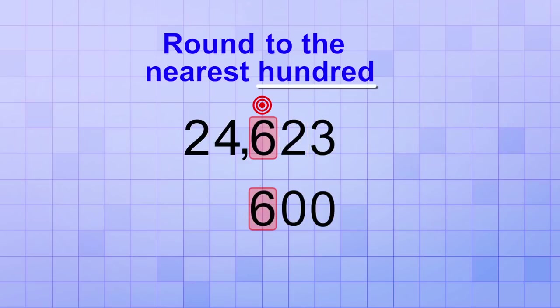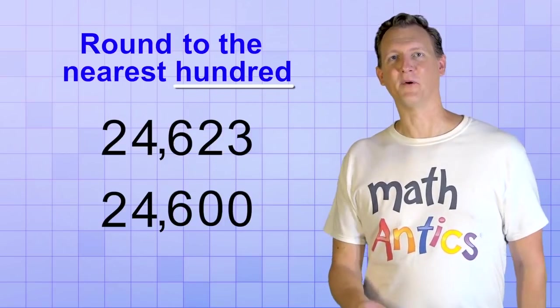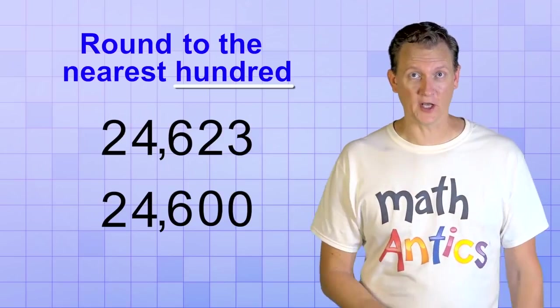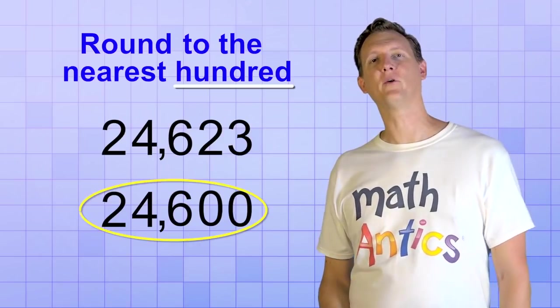Last, we just keep all the digits in bigger number places the same in the rounded version. There, we've rounded the original number to the nearest hundred, and the answer is 24,600.